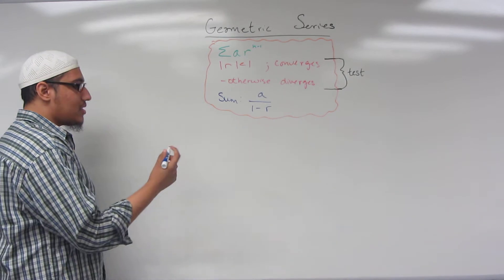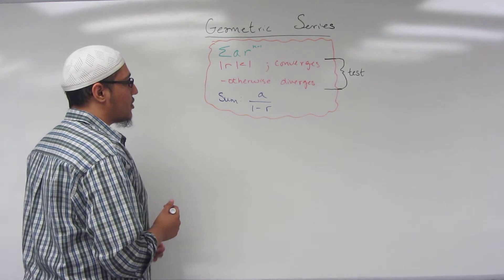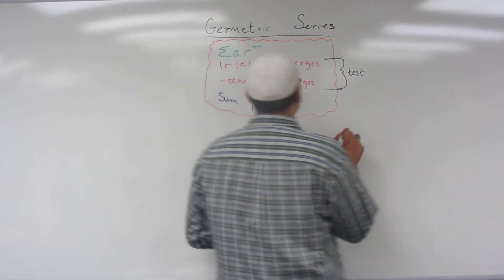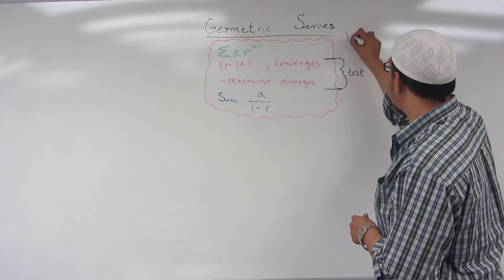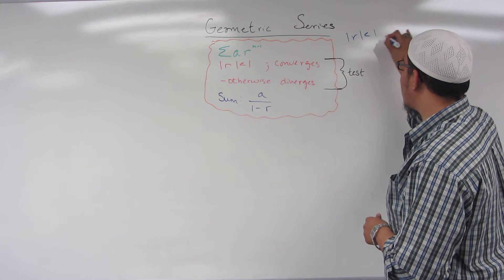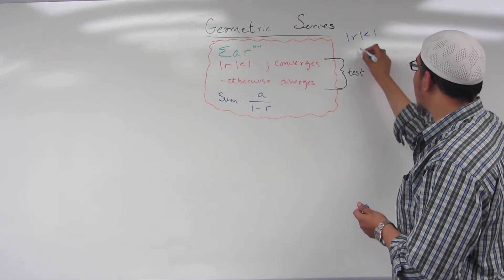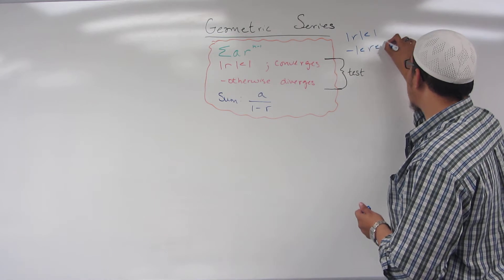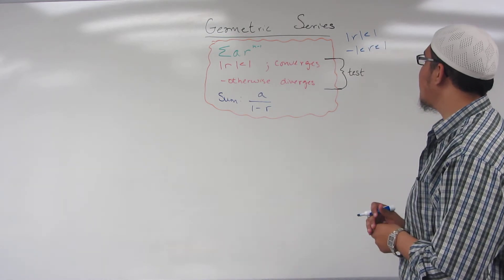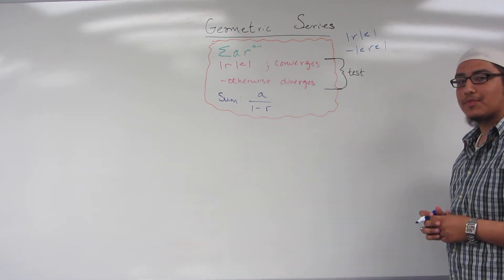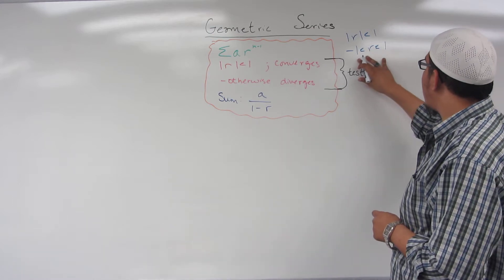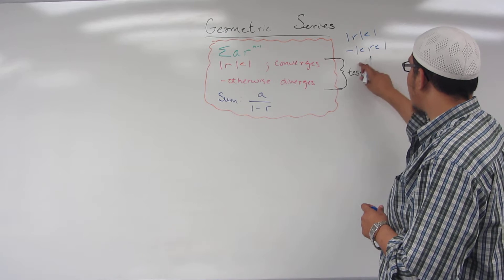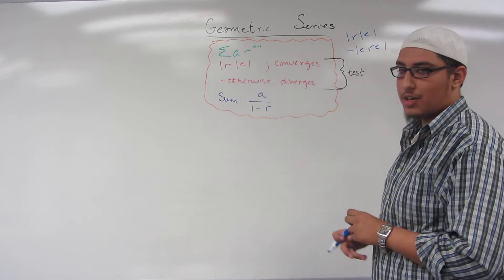In other words, absolute value of R less than 1 is the same thing as saying negative 1 is less than R, which is less than 1. Notice that 1 is not included in this interval. So if the R value lies in this interval, then your series converges.